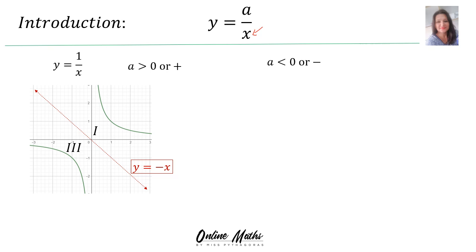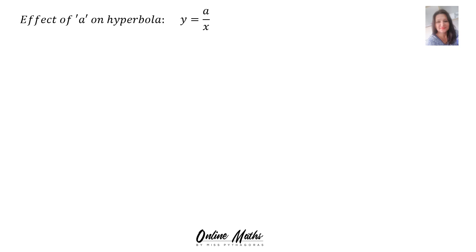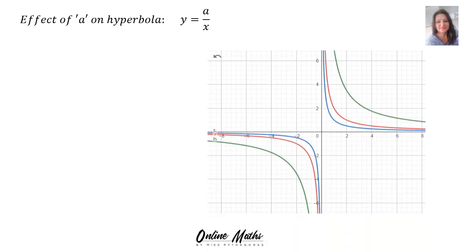When a is smaller than 0, or negative — for example y is equal to minus 1 over x — then your hyperbola will lie in the second and the fourth quadrant. The axis of symmetry in that case is the line y is equal to x. The value of a only has an influence on the shape of your hyperbola, as you can see comparing y equals 1 over x, y equals 2 over x, and y equals 7 over x.